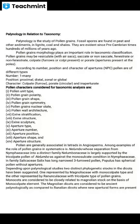According to the number, position, and character of apertures, pollen grains are of different types. This is referred to as the NPC system: N for number, P for position, and C for character. The number can range from one to many. The position can be proximal, distal, zonal, or global. The character can be colpate (furrow), porate (circular), or inaperturate — meaning aperture absent.